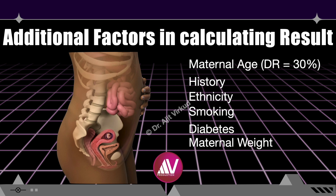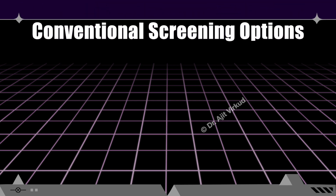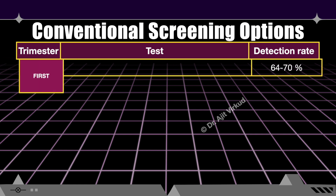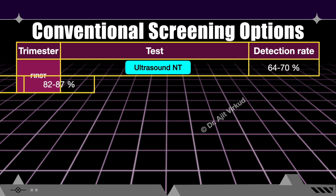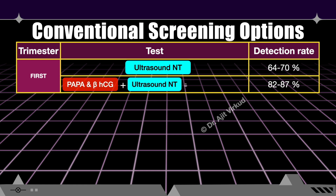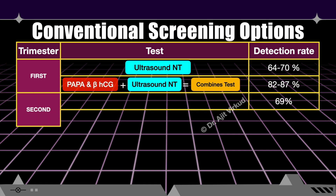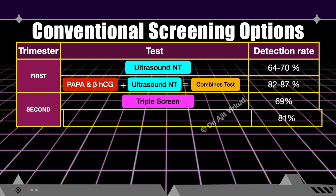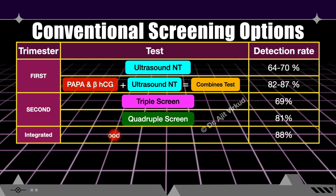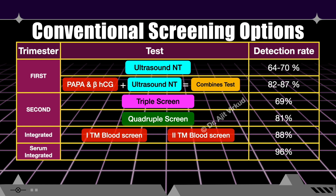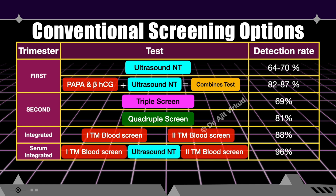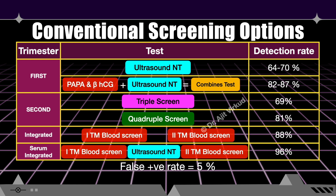Let me summarize the current screening options available for trisomy 21 and other aneuploidies, trimester-wise, along with their detection rates. The table here illustrates these beautifully. The detection rate for maternal age alone is only 30 percent, which is unacceptable; hence we require other tests. Although the integrated test has the highest detection rate, a flaw is that the clinician must wait several weeks from the first blood draw to get the final result. Fortunately, all these tests have a false positive rate of five percent, which is easy to remember. This is perhaps the most important slide of the talk, and students — especially MRCOG candidates — must memorize it.